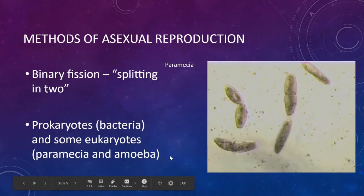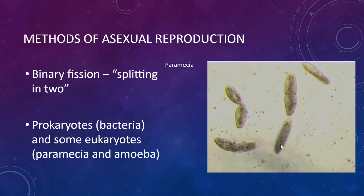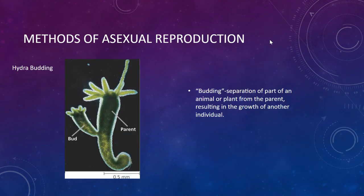Here you see the paramecia splitting — this is what the brown paramecia look like that we examine in living environment. They have a little slipper shape, and that spot where you'd put your foot into the slipper is how they eat. That's called the oral groove.